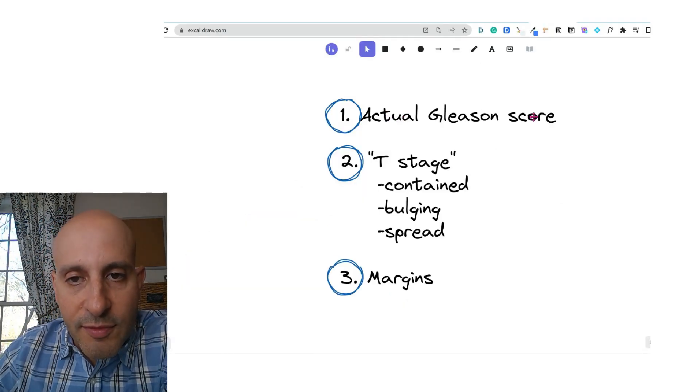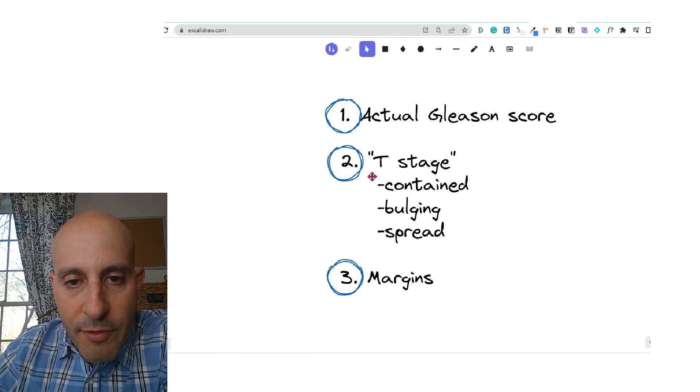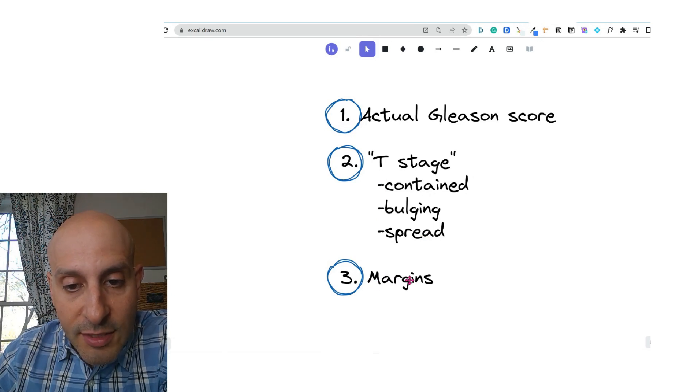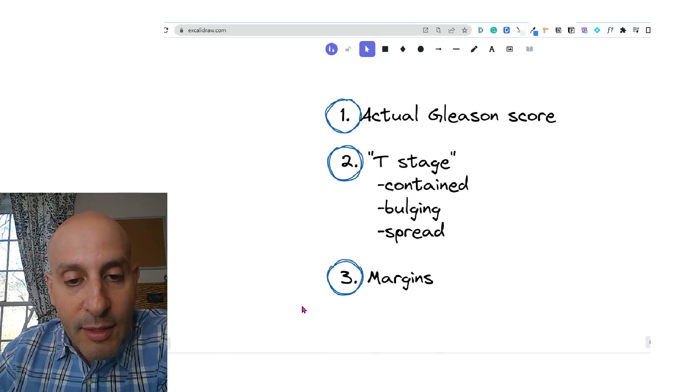So the pathology report tells us the final Gleason score, whether the cancer was biologically contained, bulging, or spread. And then, did the cancer touch the blue line anywhere?